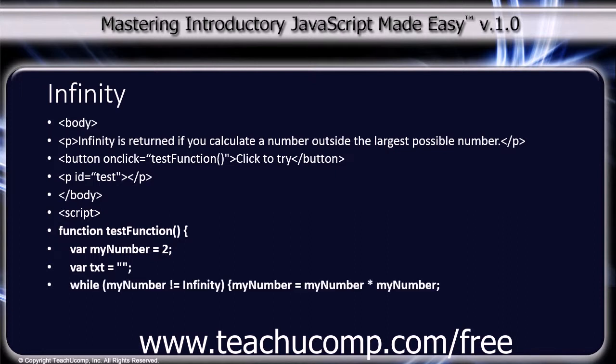While (myNumber !== Infinity), open curly bracket. myNumber equals myNumber times myNumber, semicolon. txt equals txt plus myNumber plus a linebreak tag, semicolon. Close curly bracket.